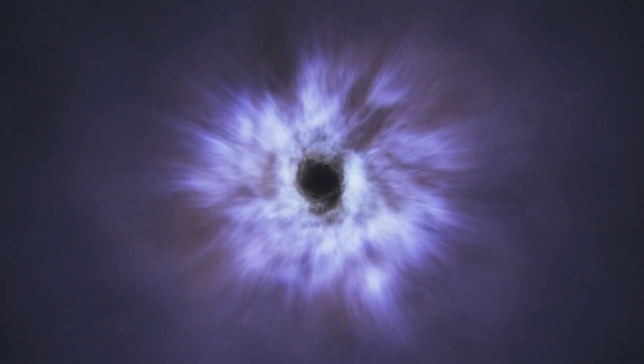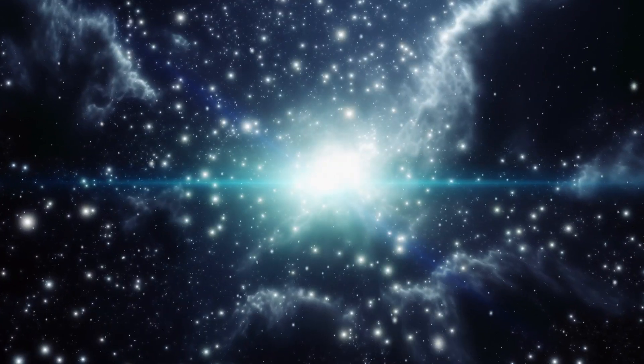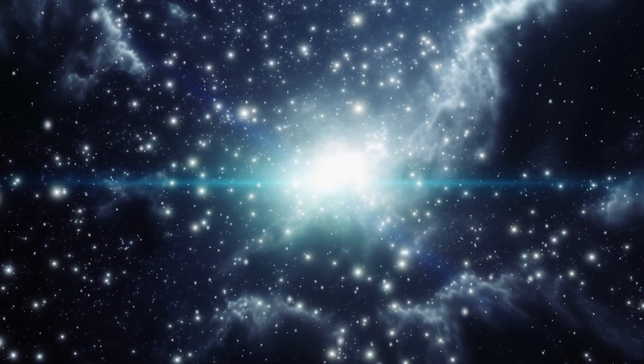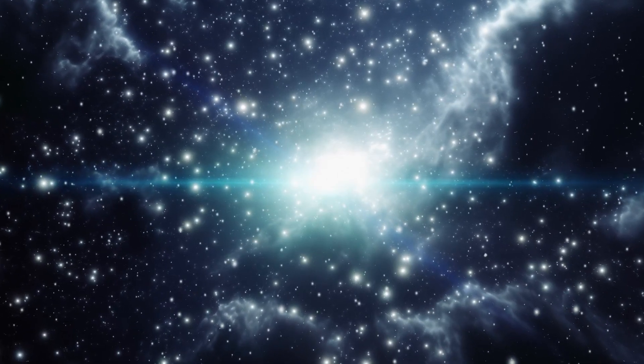It is indeed the closest star to us. Proxima Centauri means the nearest star of Centaurus in Latin. Discovered in 1915 by Scottish astronomer Robert Thorburn Aitken, Proxima Centauri remains invisible to the naked eye due to its apparent magnitude of 11.13. However, don't let that fool you. Proxima Centauri is still a star worth marveling at.